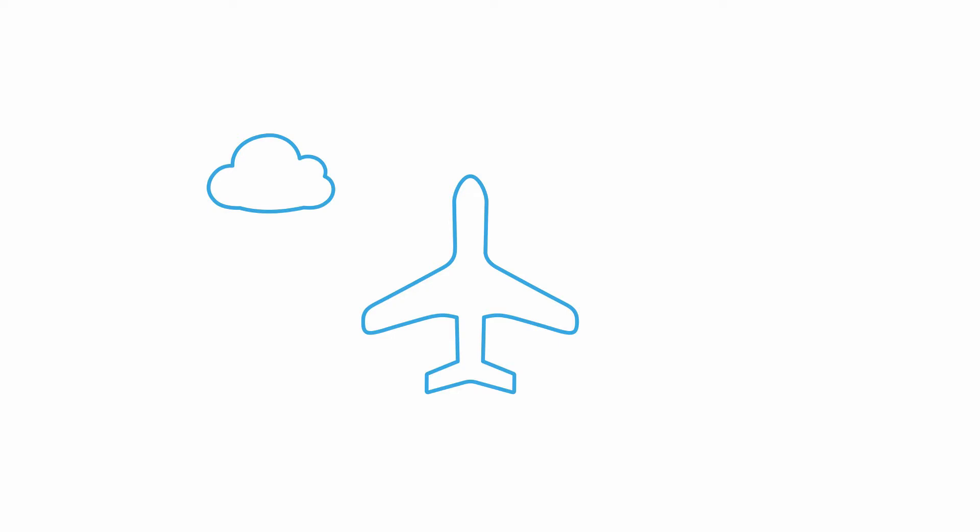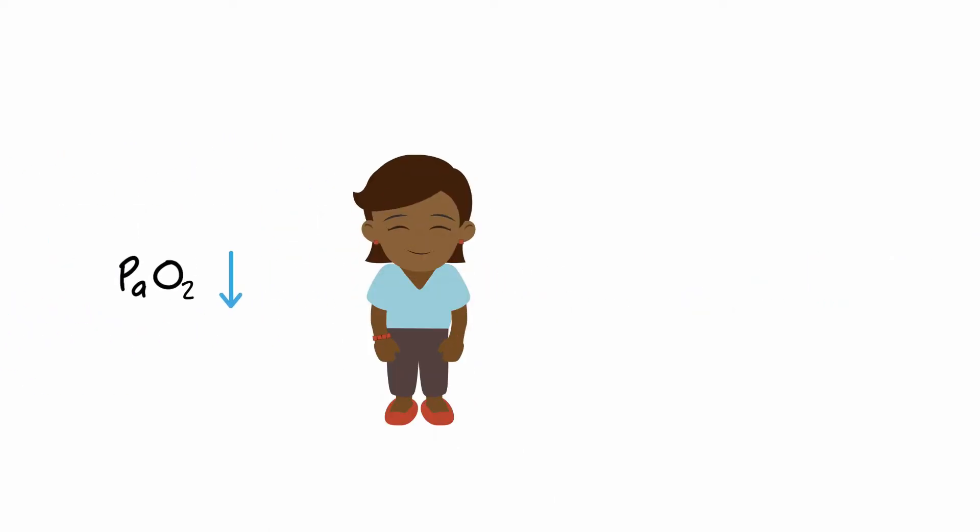Under the hypobaric conditions of air travel, arterial PO2 falls. For people with normal lung function and normal resting arterial oxygen levels at sea level, the fall still translates into an acceptable arterial PO2.